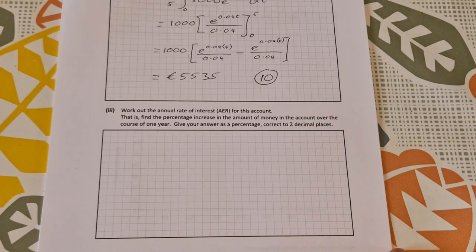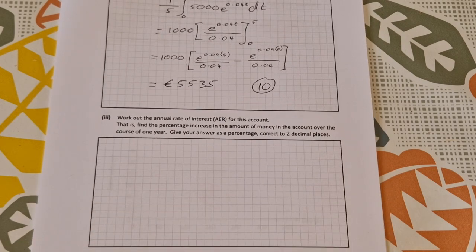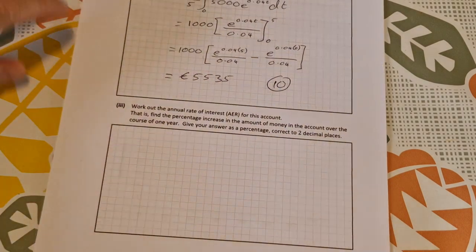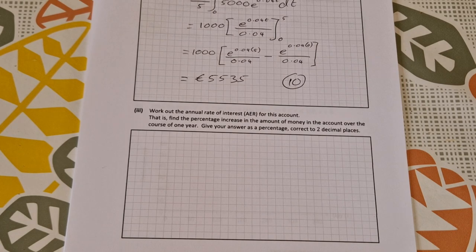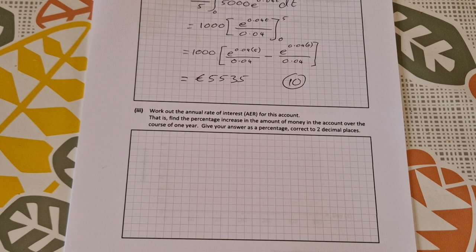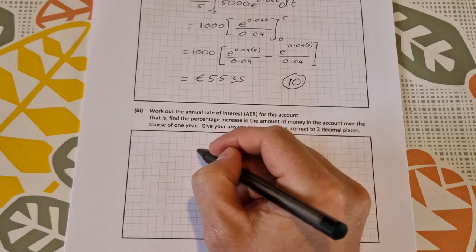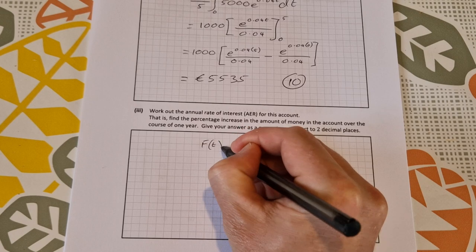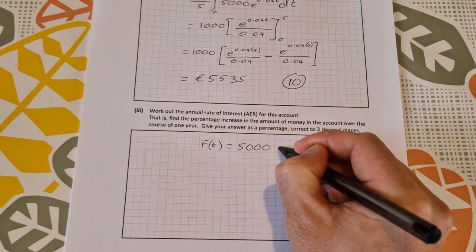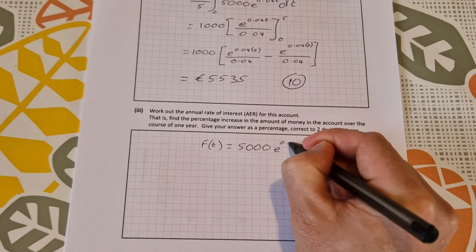And the last part of that question, C part three: work out the annual rate of interest or the AER for this account. We're given the monthly one initially. That is, find the percentage increase in the amount of money in the account over the course of one year. Give your answer as a percentage. There's a couple of ways you can do this, but the easiest way is actually just to say e... So we have F of T, just to explain it, F of T is equal to 5,000 multiplied by e to 0.04 t.